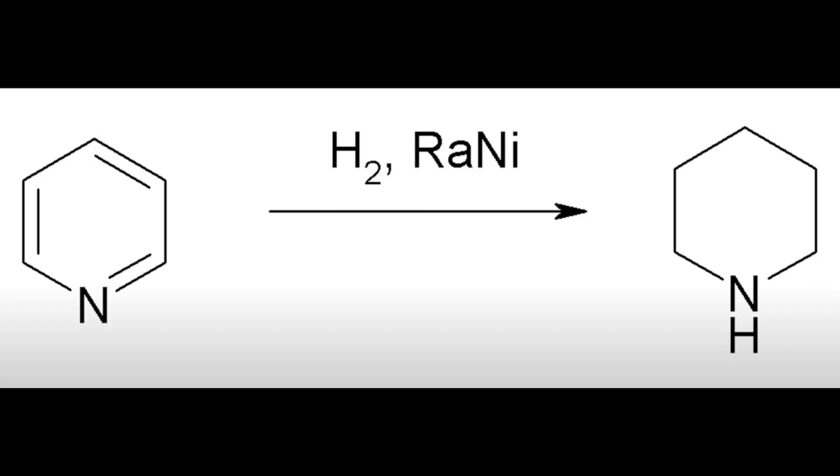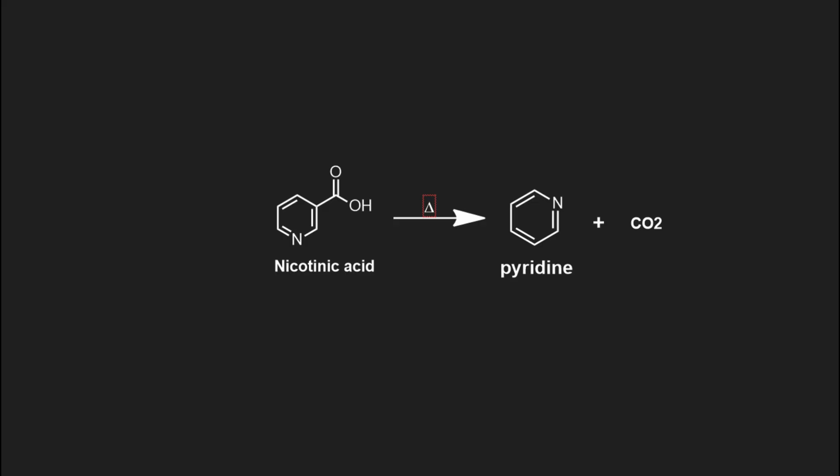It can also be hydrogenated with Raney nickel to form piperidine. Today we will make it using the decarboxylation of nicotinic acid, also known as niacin.